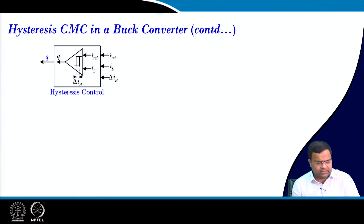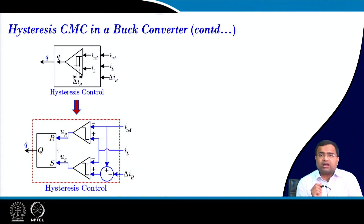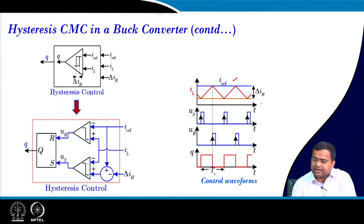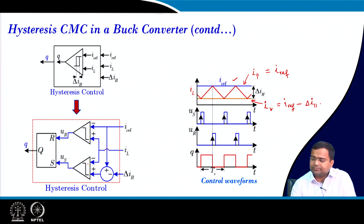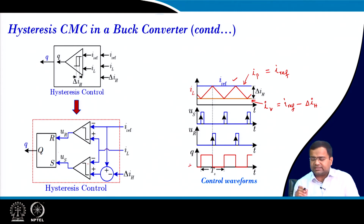The first step in hysteresis control — one way to realize it, although not hardware-optimized, just for understanding — is to use two comparators and one RS latch. Whenever the inductor current reaches the peak current, which is I_ref, it turns off; and the valley current is I_ref minus delta_iH. The inductor current is forced to follow the trajectory within that peak and valley, and the RS latch generates the gate signal accordingly.